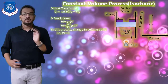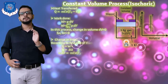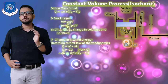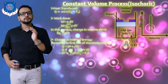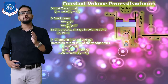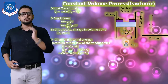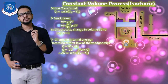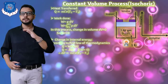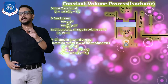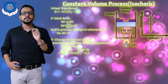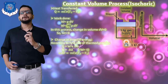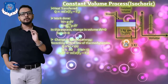Next, we determine the change in internal energy. This can be done using the first law of thermodynamics: Q = ΔU + W. We know heat transfer is mcv(T2 - T1) and work done W is zero, so we directly conclude that change in internal energy ΔU = Q = mcv(T2 - T1).